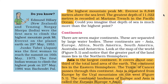The highest mountain peak, Mount Everest, is 8,848 meters above sea level. The greatest depth of 11,022 meters is recorded at Mariana Trench in the Pacific Ocean. The depth of the sea is much more than the height of the highest point on land.